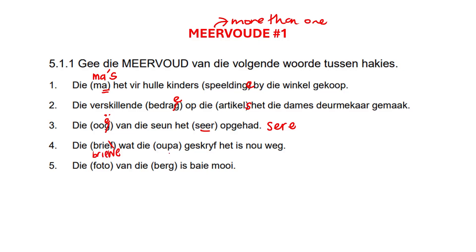Opa. What does opa become? I just want to take you back to ma. Just say ma again — ma is ma. But opa is just opa. This a is not a long a; you don't really proclaim that a. So it's just opa — therefore it just gets an s at the end: opas.